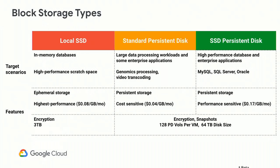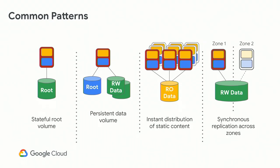There are also data management features. It comes standard with encryption and snapshots. For scalability, you can have 128 PDs per VM, and each PD can be around 64 terabytes. Common patterns include using PD as a boot device, as a read-write volume, or attached to multiple VMs as a read-only device. A new feature coming soon is synchronous replicated PDs across zones, providing active-active replication across two zones in the same region in case of a PD failure.